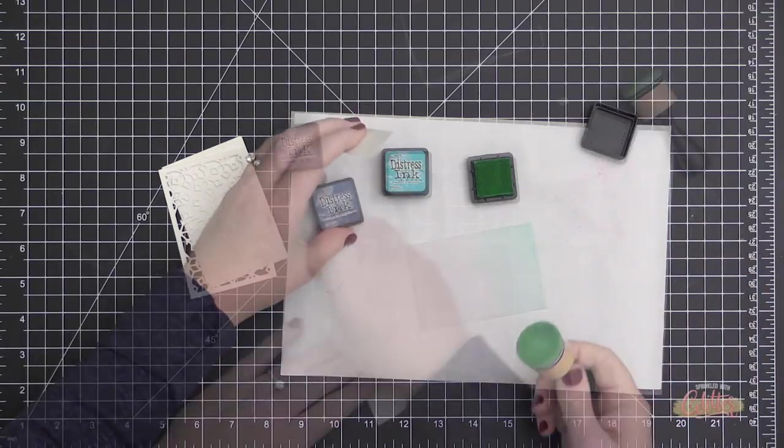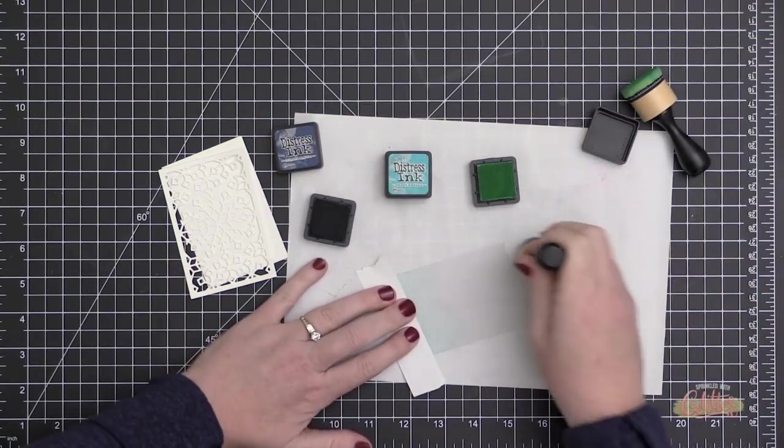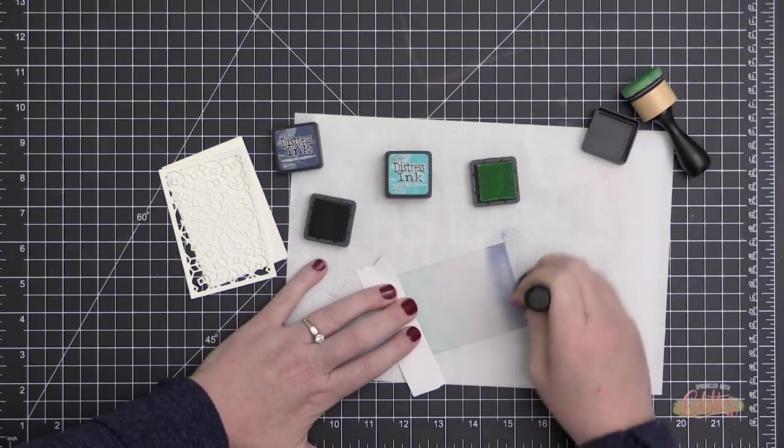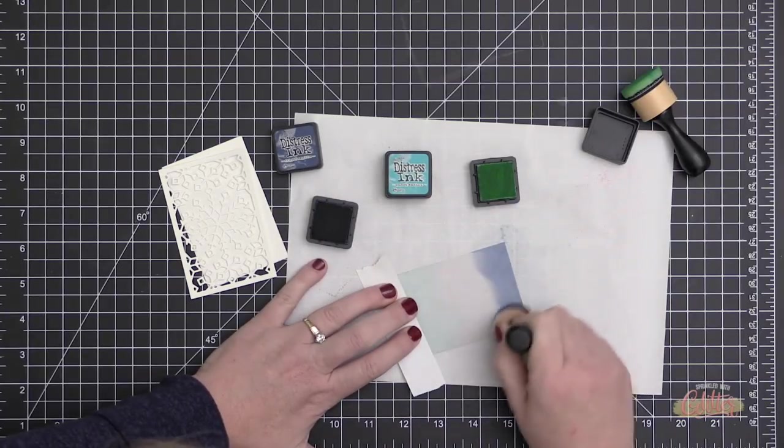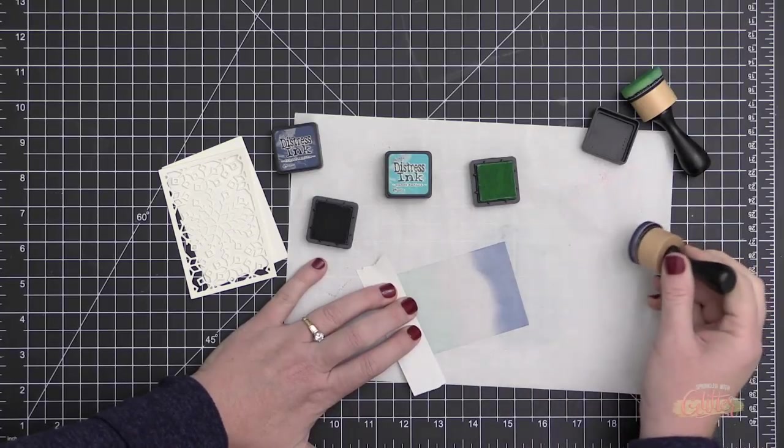Now you'll notice I have some Post-it tape over my fingers—that's so I don't leave fingerprints in my ink blending. I started on the bottom with a little Cracked Pistachio, and at the top I'm blending in some Chipped Sapphire.